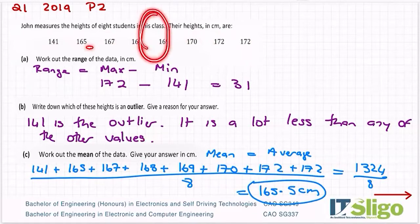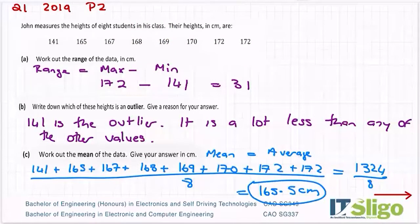So rather than being in the center of my data, which it could be, it's down here. And the reason for that is this low value, 141, is pulling my mean, my average down smaller.